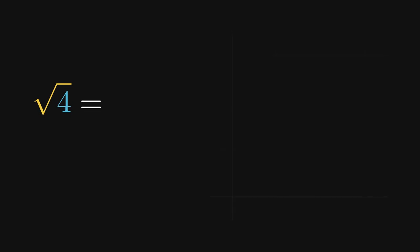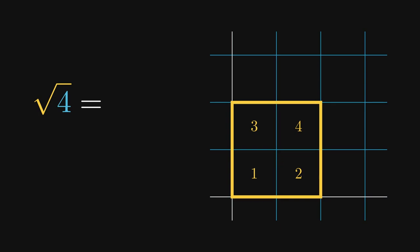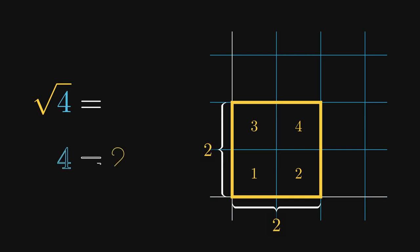The name 'square root' suggests that we need to consider a square. In particular, the number 4 tells us that this square has an area of 4. The square root is therefore the length of the side of the square that produces an area of 4. In this case, the side length is 2, and since all sides of a square are equal, even the vertical side has length 2. This means we can write 4 as 2 times 2 — that is how we find the area of a square. Since the side has length 2, the square root of 4 equals 2.